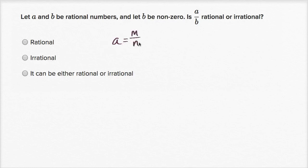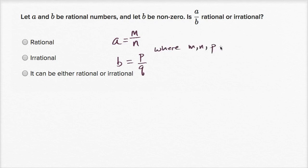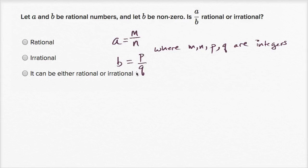So I could write A is equal to M over N, and same thing about B. I could write B as being equal to P over Q, where M, N, P, and Q are integers — by definition of what a rational number is. They're telling us these numbers are rational so I can express them as these types of ratios.